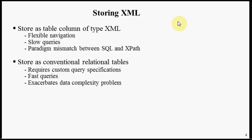The second type of storage is to take an XML document and store it in conventional relational database tables. Unfortunately, that requires custom queries — for every different kind of XML document, you have to write custom queries to pull out the data. The queries tend to be rather fast, but it exacerbates data complexity and introduces more tables.